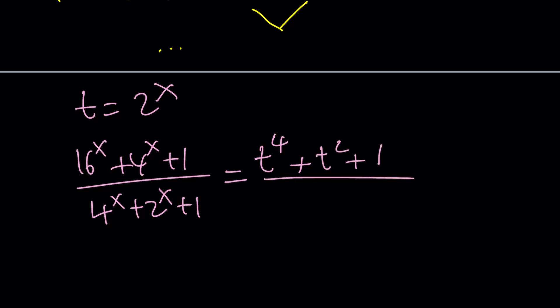And at the bottom, 4 to the x. Again, t squared. 2 to the x is t and plus 1. And this is equal to 3.